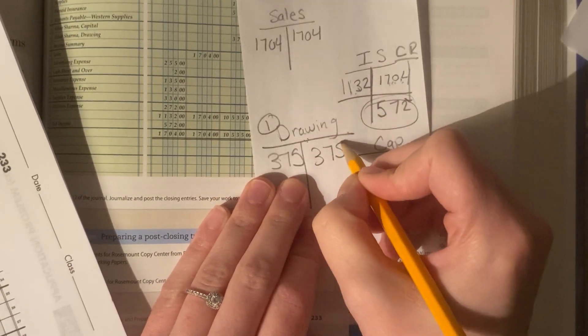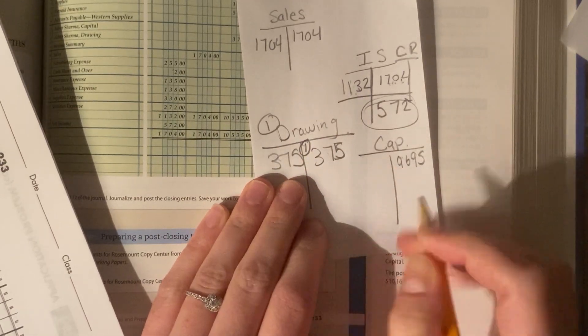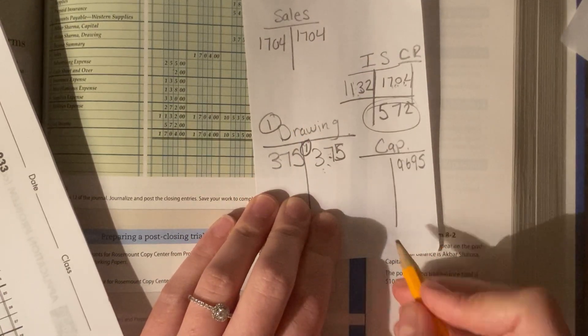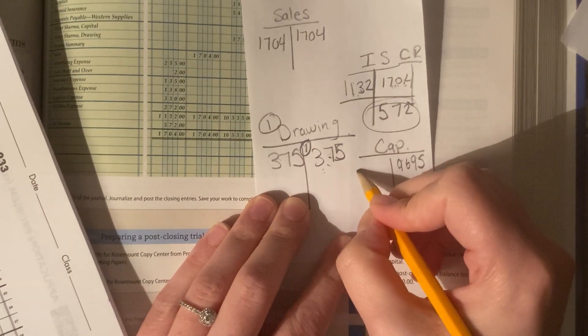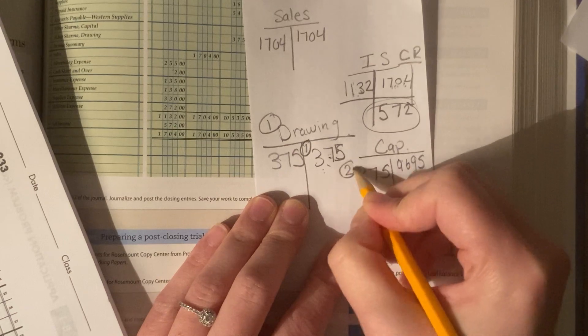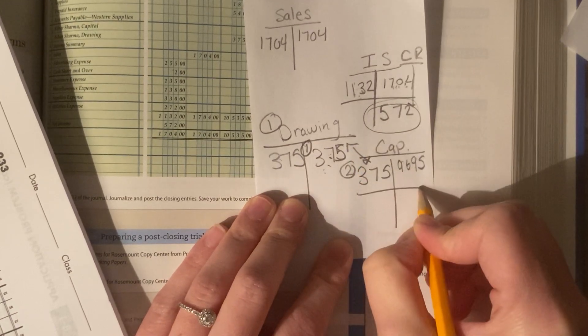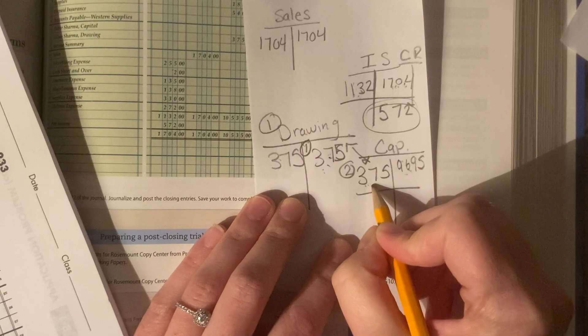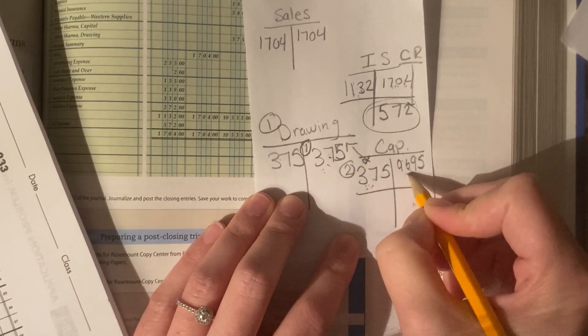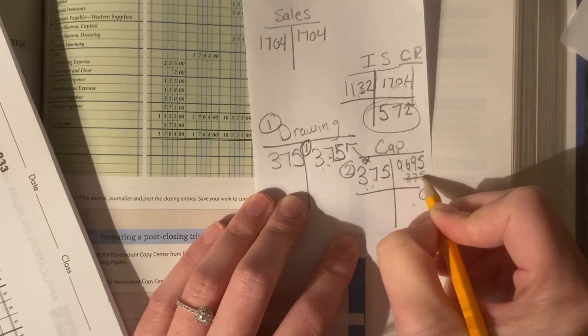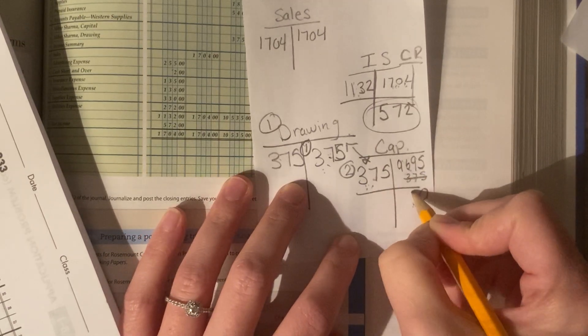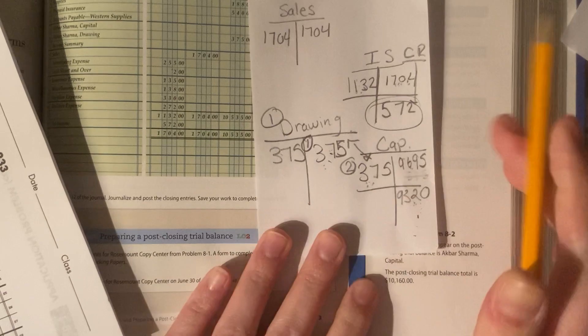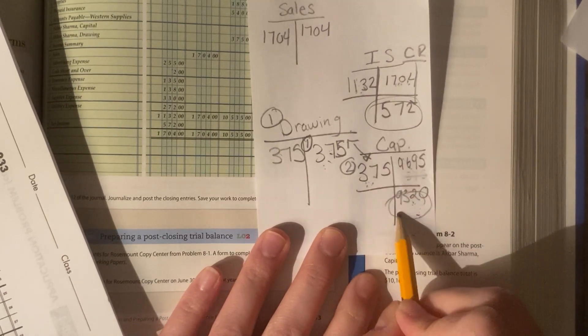This is what we did. We credited $375. Well, if we credited this, we need to have a debit entry. And we close it to the capital account, so we debit. Here it is. Well, if our normal balance of capital account is this, and this is the debit, we have to subtract them. So, we take $375, and we minus it, $2, I think, $3, $9. Okay, I wrote that there so I could do mental math. We are now at a new capital account total of $9,320.